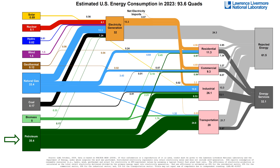Petroleum was the largest primary energy source in the United States in 2023. 35.4 quads were used across various end-use sectors. As we move to the right, we see the first branch off the main petroleum bar is a thin line going to electricity generation. To be specific, 0.17 quads of petroleum were used to generate electricity at the few remaining oil-fired power plants in the United States. Moving further to the right, the bar splits again. The largest branch of the petroleum energy flow shows 24.8 quads being consumed by the transportation sector, which is all of the vehicles in this country using gasoline, diesel, and other petroleum-based fuels.